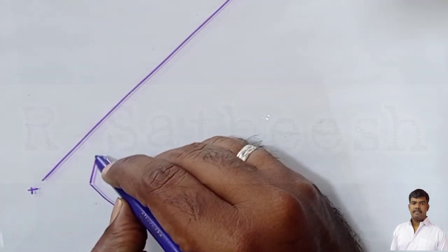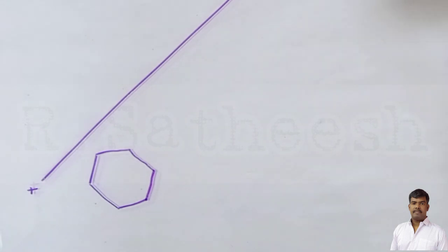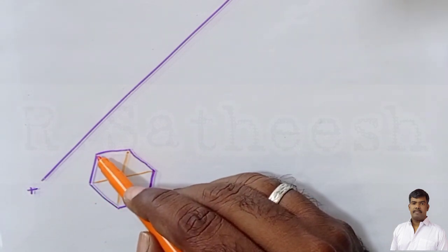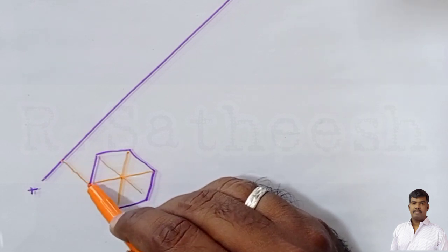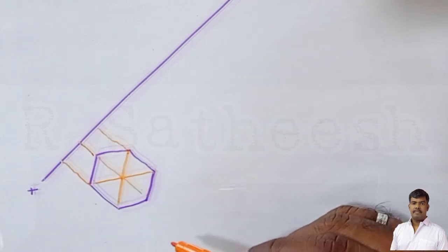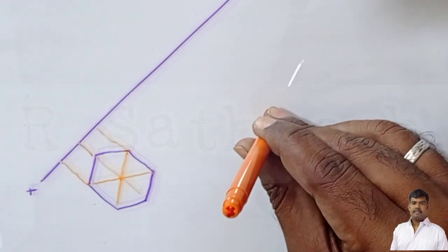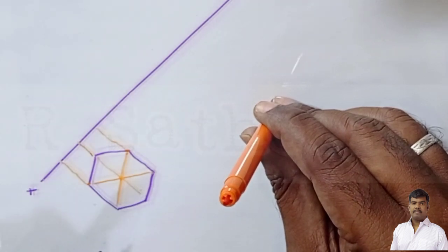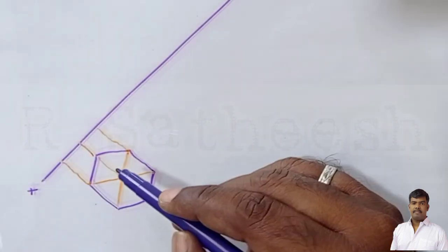First, draw the hexagon with the given side of 30 mm. To determine the axis, join the diagonals — at least two of them — to find the center. Since the solid is tilted and resting on HP, the true shape of the prism base (hexagon) is visible in the top view. Therefore, first draw the top view below XY, then draw projection lines up to complete the front view.